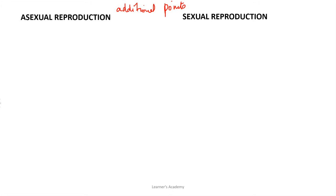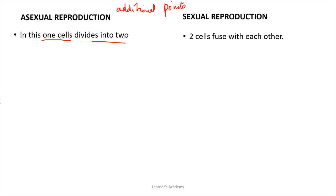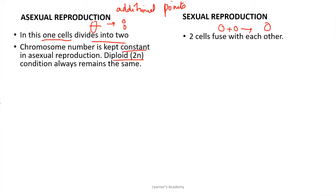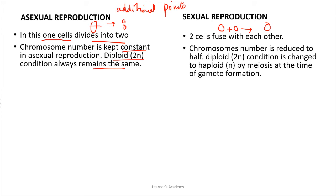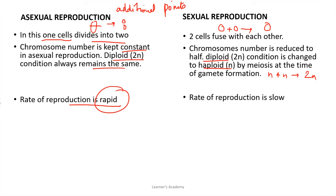Some additional points for asexual reproduction and sexual reproduction which you can add: The first point is that in asexual reproduction one cell divides into two, whereas in case of sexual reproduction two cells fuse with each other. In asexual reproduction, chromosome number is kept constant because the diploid 2N condition always remains, whereas in case of sexual reproduction the chromosome number is reduced to half. The rate of reproduction is very rapid in asexual reproduction, whereas the rate of reproduction is slow in sexual reproduction.